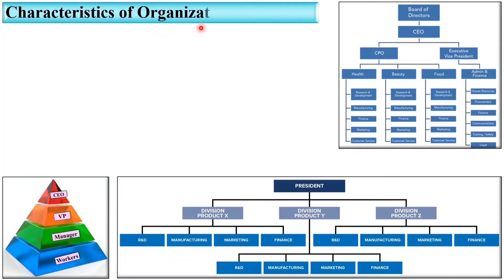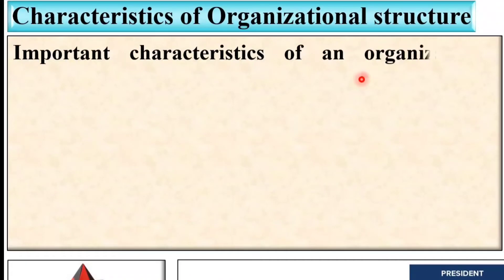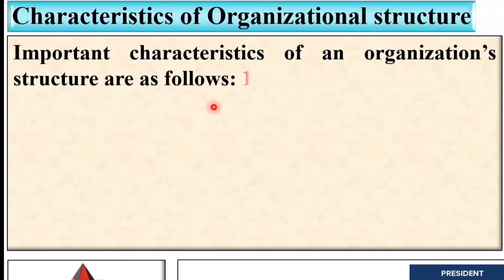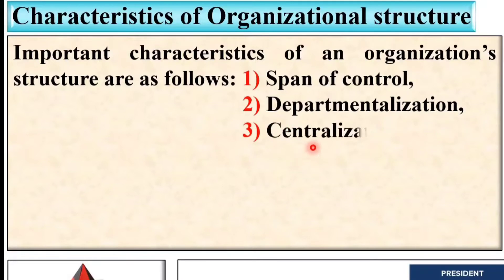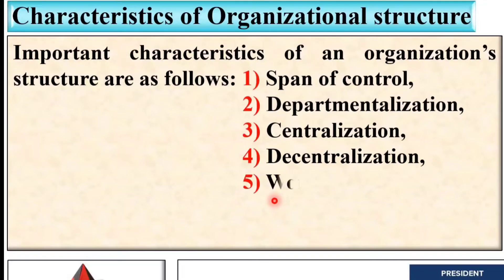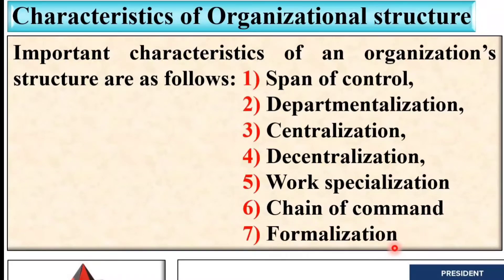Next, characteristics of organizational structure. The important characteristics are as follows: span of control, departmentalization, centralization, decentralization, work specialization, chain of command, and formalization. We will see all these characteristics of organizational structure one by one briefly.